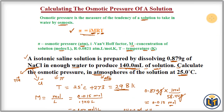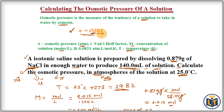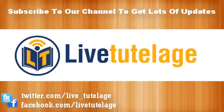To summarize: we calculated the osmotic pressure of the solution using the formula π = iMRT. First, we calculated the molarity of the solution, then converted the temperature from degrees Celsius to Kelvin, and then applied the formula to get 5.24 ATM.